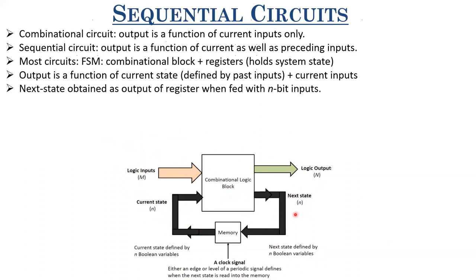So if the next state is n bits, the current state could also be n bits. The next state comes through this combinational block, generated by giving logic inputs as well as current state as input to this combinational block. This next state is retained here, and the moment the active clock edge comes, this is transferred and becomes the current state, and the next cycle computation begins. If it is an edge triggered register, next state bits are sampled and fed to the combinational block only when the active clock edge comes.